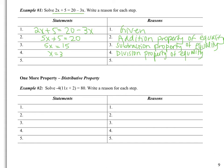Before we do any more proofs, we need to talk about the distributive property — this is one that we've learned before. A multiplied by B plus C equals AB plus AC. So I just distributed the A.